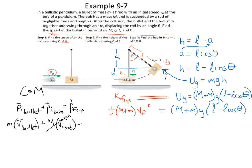So the momentum equation becomes: m times v_initial(bullet) equals the mass of the whole system (M + m) times v_final of the system. That final velocity in the momentum equation is the same final velocity we found from the energy equation. We're going to solve this momentum equation for the final velocity and substitute it in. Let's solve for the final velocity of the system from the energy equation first.